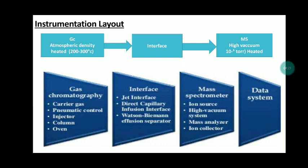If too much pressure enters the vacuum, it gets damaged. So, to protect against this damage, we require an interface. Gas chromatography contains: carrier gas, pneumatic control, injector, column, oven, and interface. There are different types of interface: jet interface, direct capillary infusion interface, and Watson-Biemann effusion separator. The mass spectrometer consists of: ion source, high vacuum system, mass analyzer, ion collector, and data system.